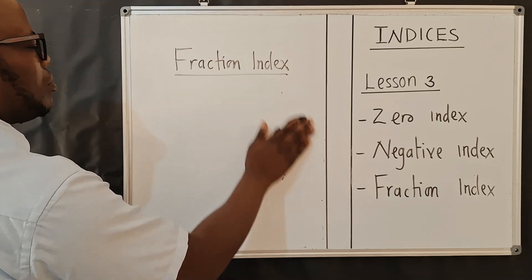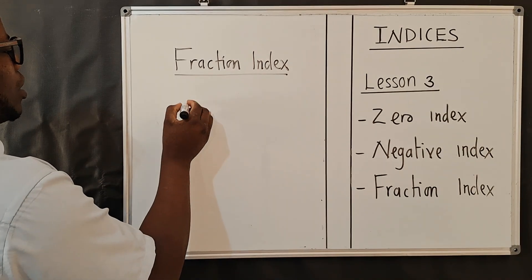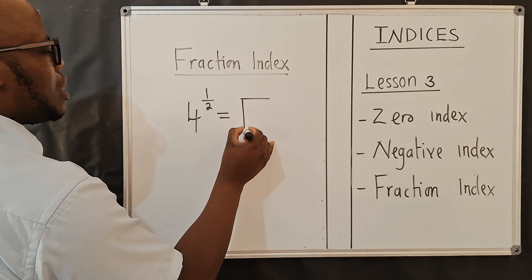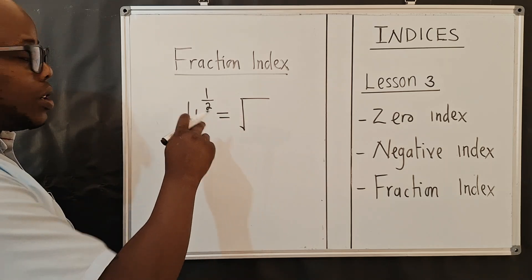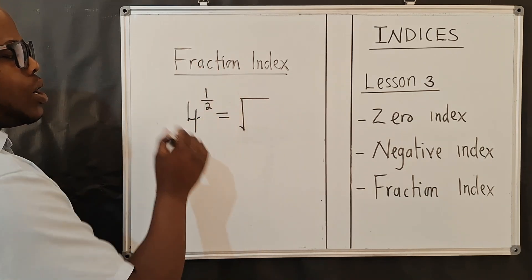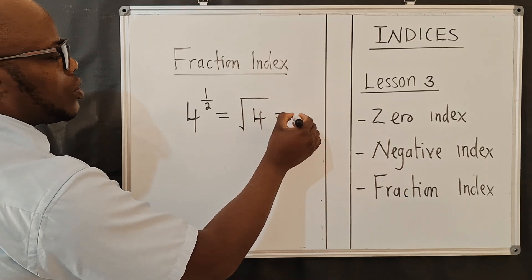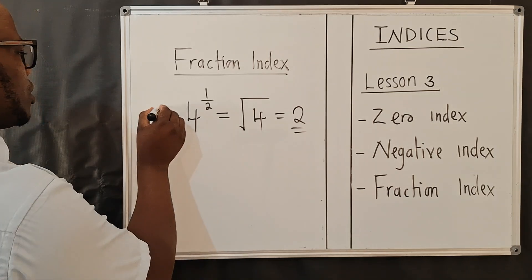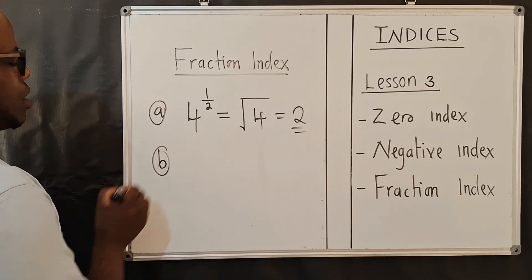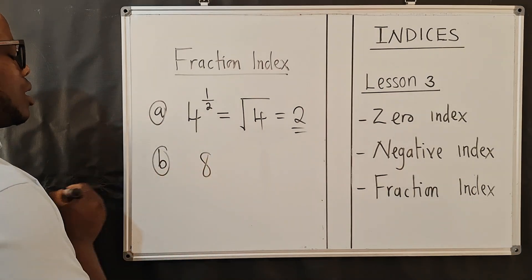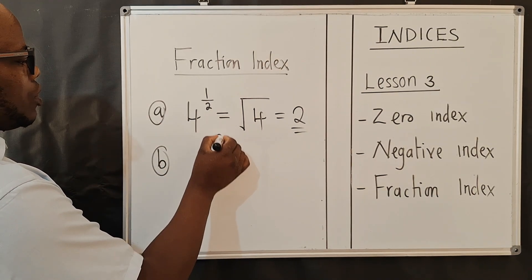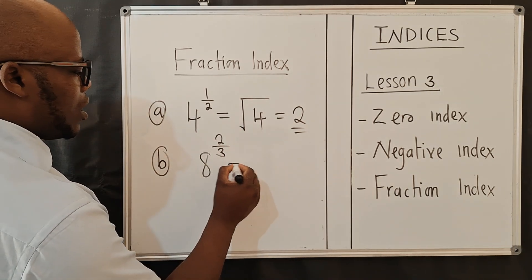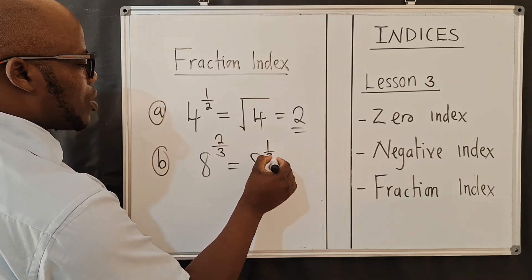Let's use numbers. Example a: four to the power one over two. This is a root — specifically a square root. We don't write the two explicitly for a square root, so this equals the square root of four, which is two. For example b: eight to the power two over three. You factor out the two, so you get eight to the power one over three, raised to the power two.